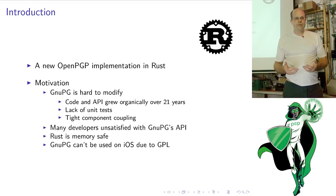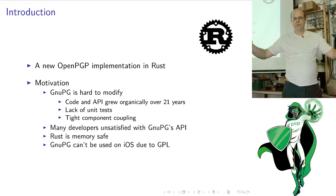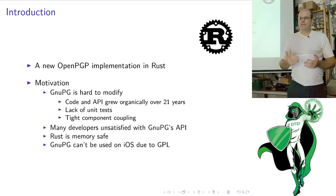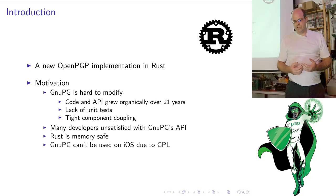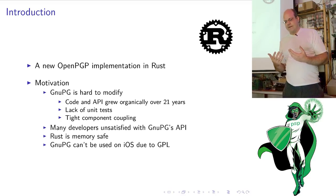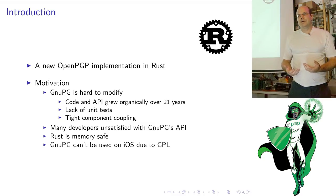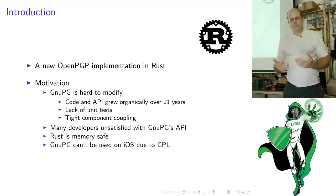When you do try to modify something, you have to have this really big global overview of the whole code base, and even then there's almost always something you haven't thought about. Talking to people who use GnuPG, they're unsatisfied with GnuPG's API — it's hard to program. And if we look at things like EFAIL and SIG spoof, it's pretty clear that we think we can do better.